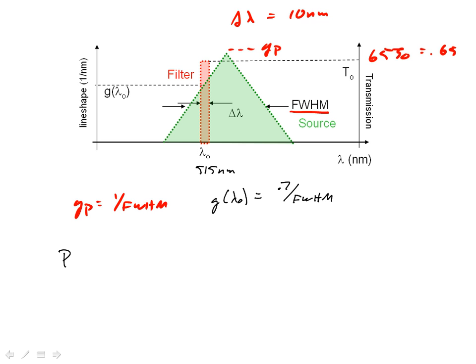We also know that the power transmission through the filter is equal to the total power from our source, which we're going to be given in the problem, multiplied by the line shape at the wavelength of interest, lambda nought. And essentially, we've already calculated that above.